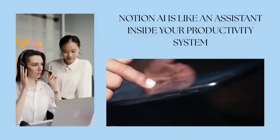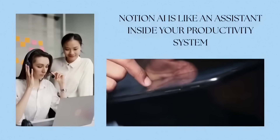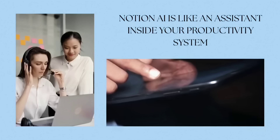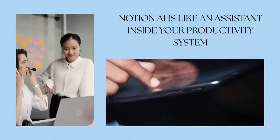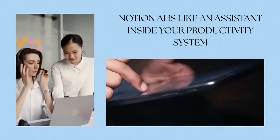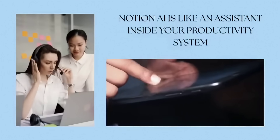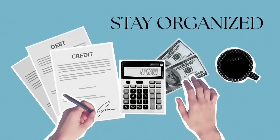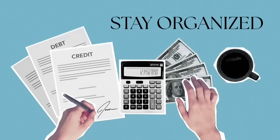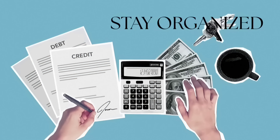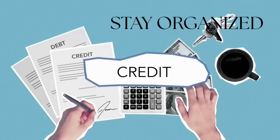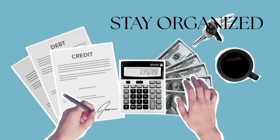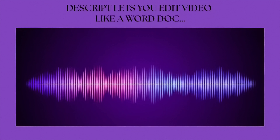Tool number six is Notion AI. If you already use Notion, you know it's great for organizing tasks, notes, and projects. Add AI to the mix and suddenly you can summarize long documents, generate task lists, or even brainstorm project ideas without leaving the app. It's like having an assistant inside your productivity system. I've used it to summarize research articles in seconds instead of spending hours skimming — that's another five to ten hours saved monthly.